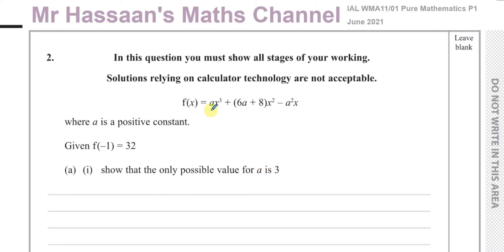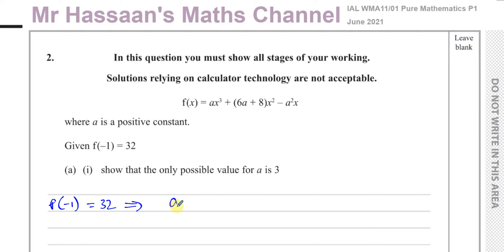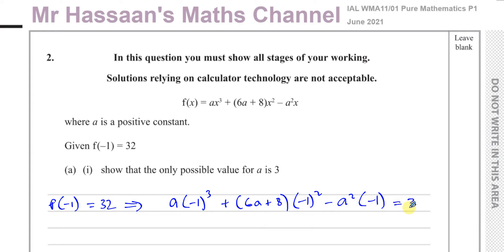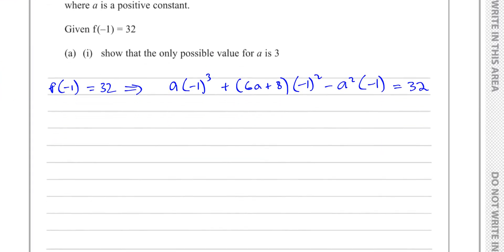f of x equals ax cubed plus (6a + 8)x squared minus a squared x, where a is a positive constant. Given that f(−1) equals 32, part 1 asks us to show that the only possible value for a is 3. So first we have to substitute inside this function. f(−1) = 32 means you put −1 in place of x, and what comes out is 32.